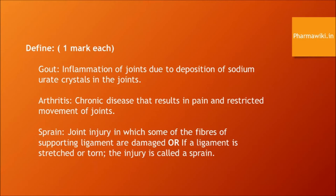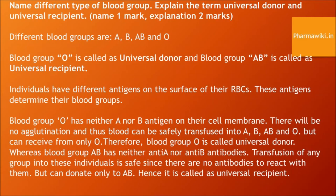Different blood groups and the universal donor and universal recipient. The different blood groups are A, B, AB, and O. Blood group O is known as the universal donor, and blood group AB is called the universal recipient. Individuals have different antigens on the surface of their RBCs which determine their blood group. Blood group O has neither A nor B antigens on the cell membrane, so there is no agglutination during transfusion, and blood can be safely transfused into A, B, AB, and O recipients. Blood group O can receive only from O. Therefore, blood group O is called the universal donor.